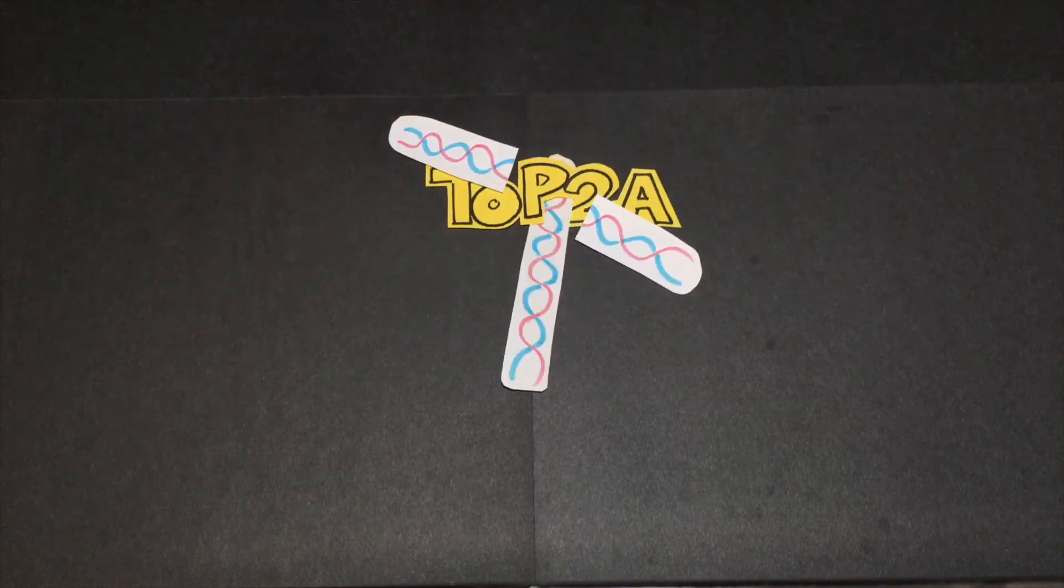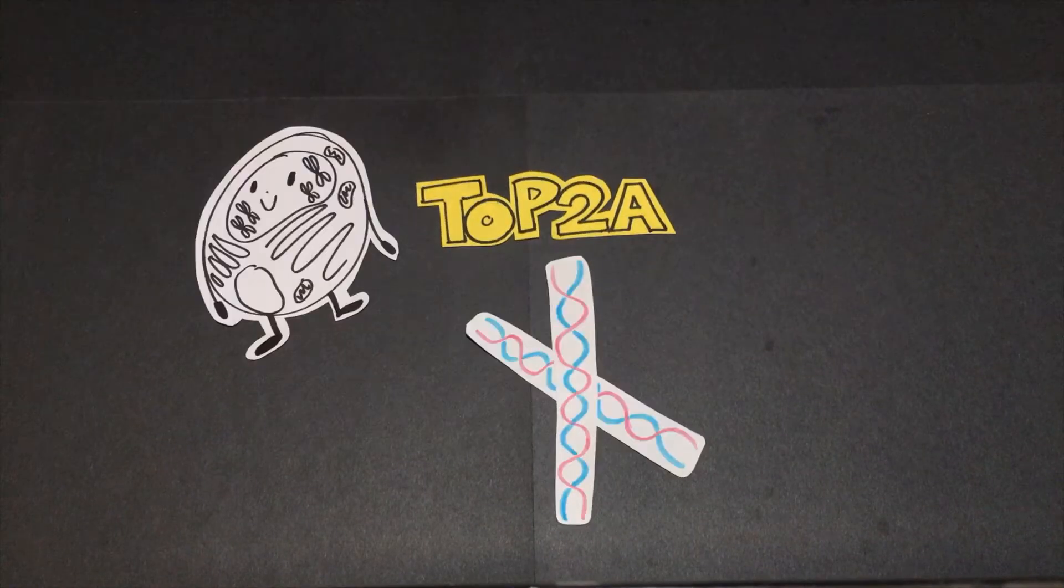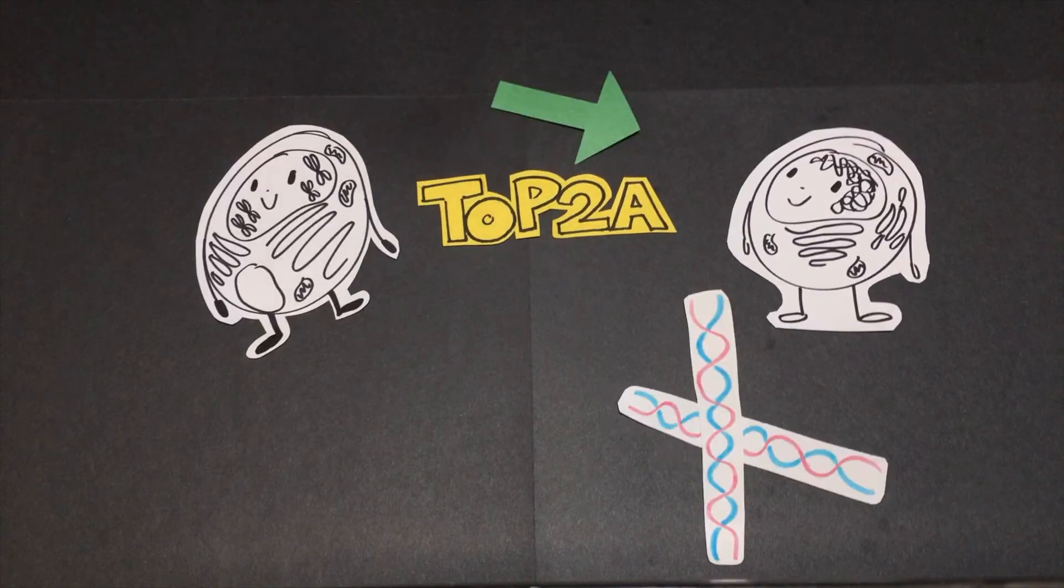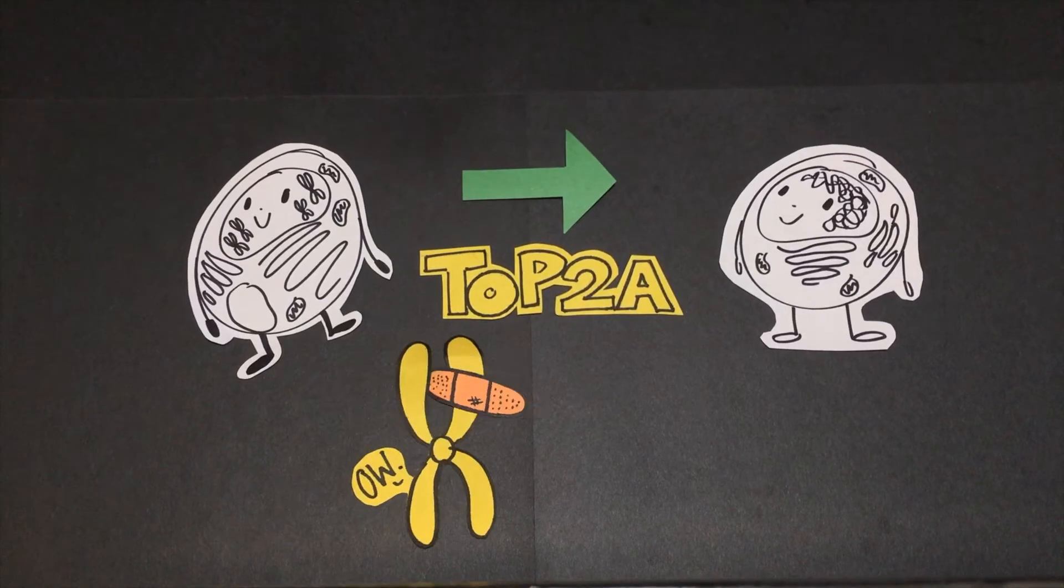It cuts both strands of a DNA duplex, passes another DNA duplex through the cleaved one, and religates the cut duplex to release tension. Of course, that's an oversimplification.